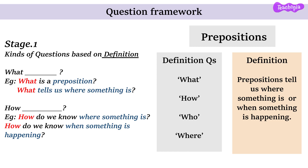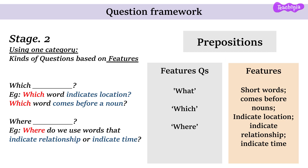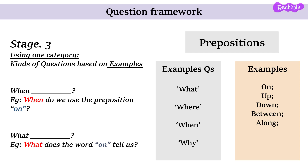Step 2 is using question starters to frame questions based on the features category. We can use words like what, which and where. For example: Which word indicates location? or Which word comes before a noun? We can also use the question starter where: Where do we use words that indicate relationship or indicate time? And for stage 3, using question starters for the examples category: When do we use the preposition 'on'? or What does the word 'on' tell us?